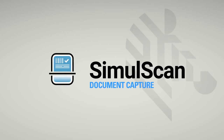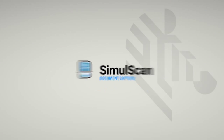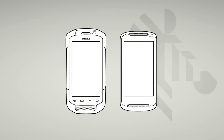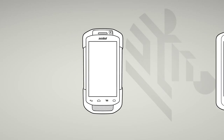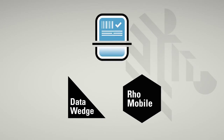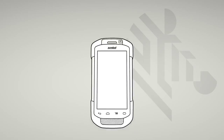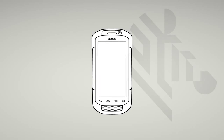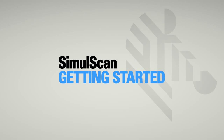SimulScan Document Capture. SimulScan enables you to extract critical information from documents by processing them in real time. It is part of a powerful suite of enterprise-grade tools embedded into your organization's software. This tutorial film demonstrates key features of the SimulScan software to help capture and process documents effectively and validate the results thereafter for maximum accuracy. Let's get started.